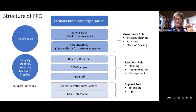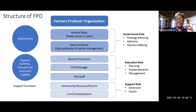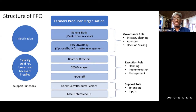The general body and executive body have a governance role: strategy, planning, direction, advisory input, and decision-making on business matters such as how much to buy and where. The execution role belongs to the board of directors, CEO, managers, and staff — their role is planning, implementation, and management of the approved plan. Because board members come from the general body, they bridge governance and execution, making selection and capacity building of the board of directors critically important.